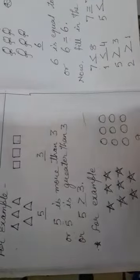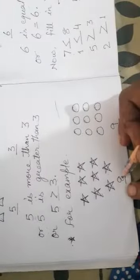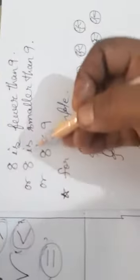Again, for example, by taking an example, 8 stars has been drawn and here 9 balls has been drawn. Which one is the lesser one? 8. So, how you will write? 8 is fewer than 9 or 8 is smaller than 9 or by indicating symbol, 8 is less than 9.